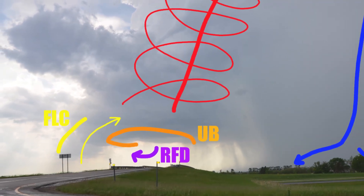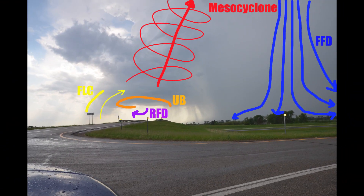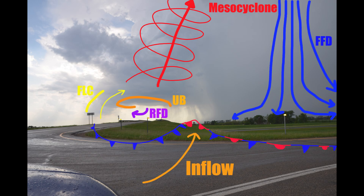The forward flank downdraft, rear flank downdraft, and mesocyclone form a wind field surrounding the supercell. The gust fronts from the rear flank and forward flank downdrafts form a narrow corridor for the storm to pull moist, warm air into the mesocyclone — this is called inflow. As the space between these two gust fronts gets smaller, the inflow speeds up to compensate for the narrowing channel, dropping in pressure along the way. At the intersection of these gust fronts, the inflow can become particularly intense as it gets occluded, and this is the part of the storm most likely to produce a tornado.